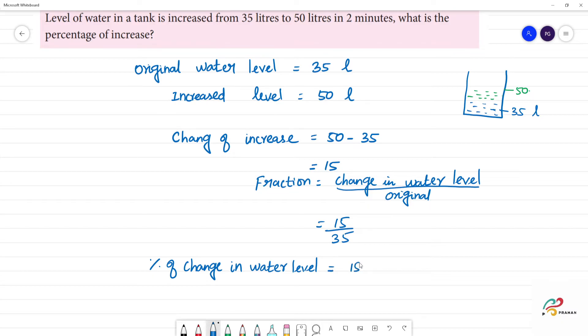The percentage of increase in water level is equal to 15 by 35 into 100. 5 cancels out, 35 is 15 times 5, so this is equal to 300 by 7 percentage.